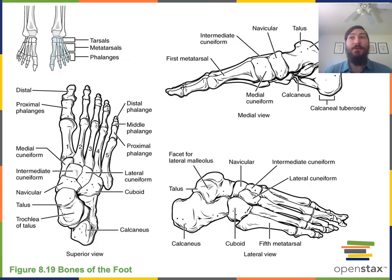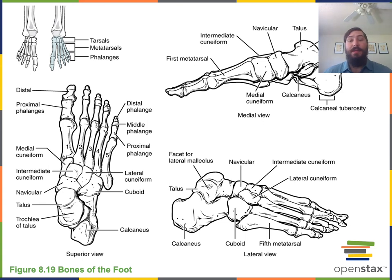There are seven tarsal bones in each foot, so 14 tarsal bones total. The talus is the most superior of the tarsal bones and contacts the tibia. The calcaneus is the largest of the tarsal bones. Then we have the cuboid on the lateral side, and on the medial side is the navicular, as well as three cuneiform bones: the lateral, intermediate, and medial cuneiforms.